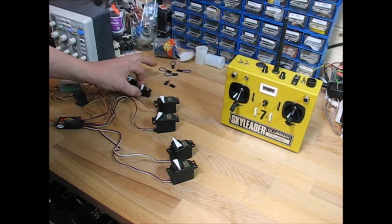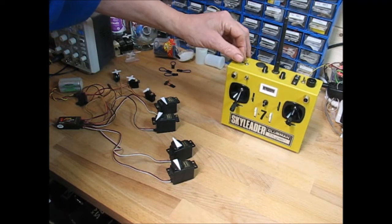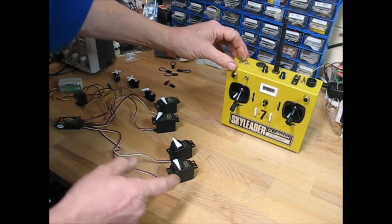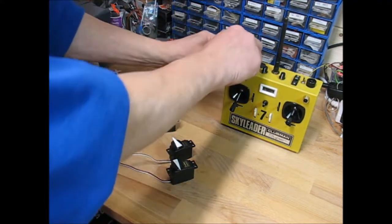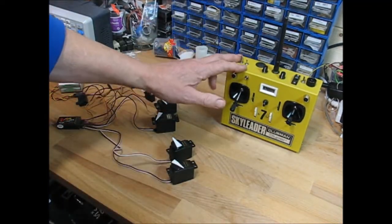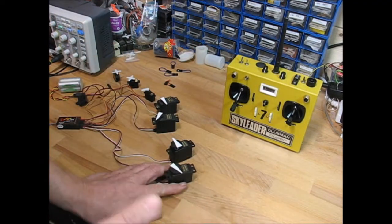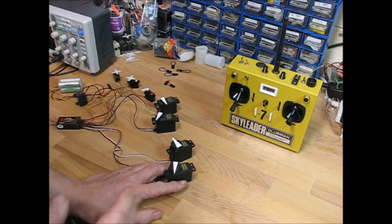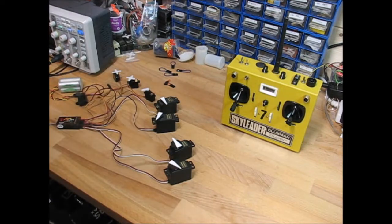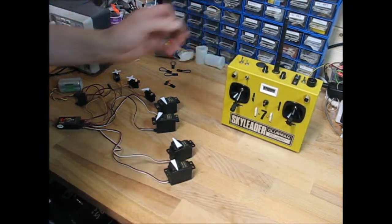This is channel 7 which is the retractor flaps or whatever it is. And as before we've got the range check function where if we flick this three times the idea is you put the transmitter down somewhere, walk away with the model and the rudder's flapping away like this as you're walking away so you can tell if you're going out of range without having to peer inside for LEDs and things. So that's a range check. Quick flick of aileron stops that.